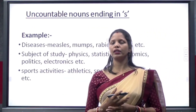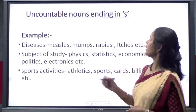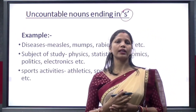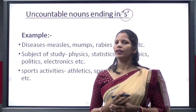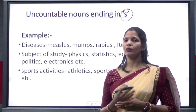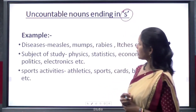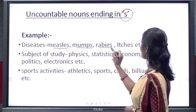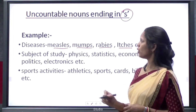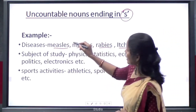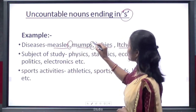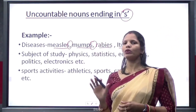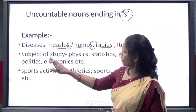There are some uncountable nouns which end in S. These nouns look like plural but actually they are uncountable and they always go with a singular verb form. For example, names of diseases such as measles, mumps, rabies, and itches end in S but are uncountable.